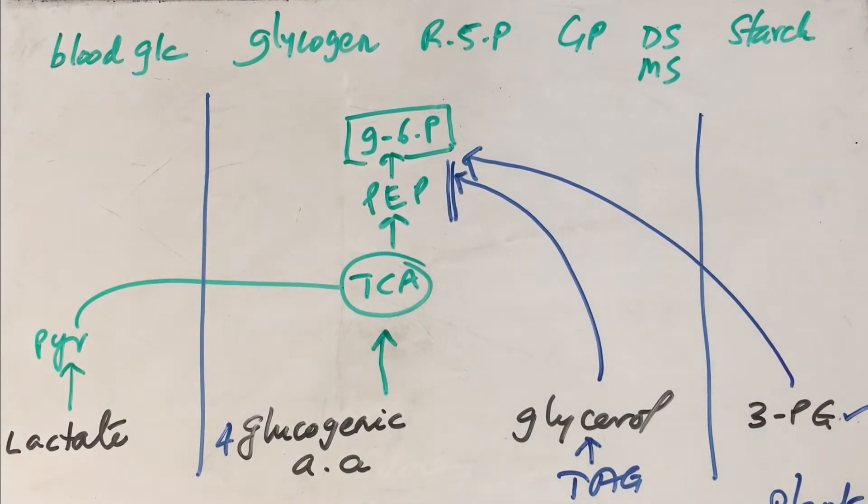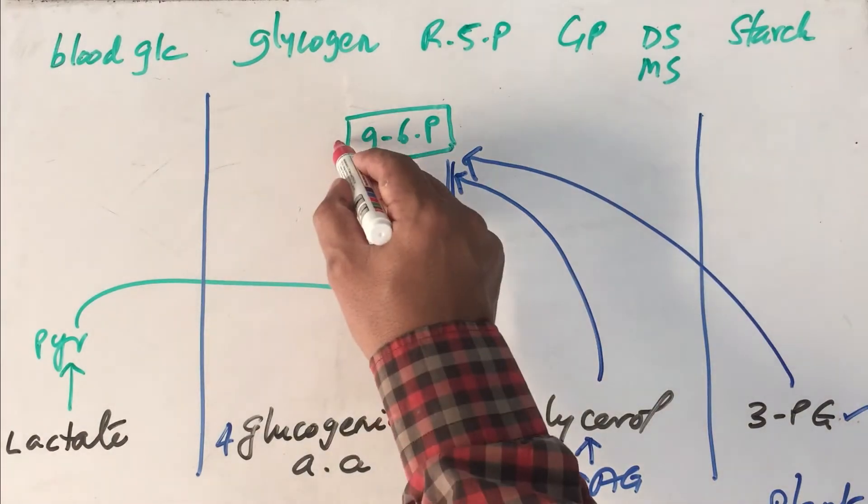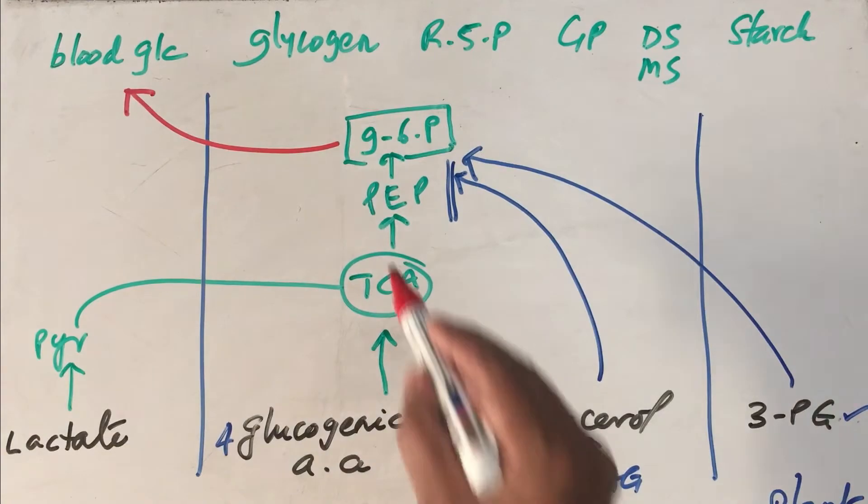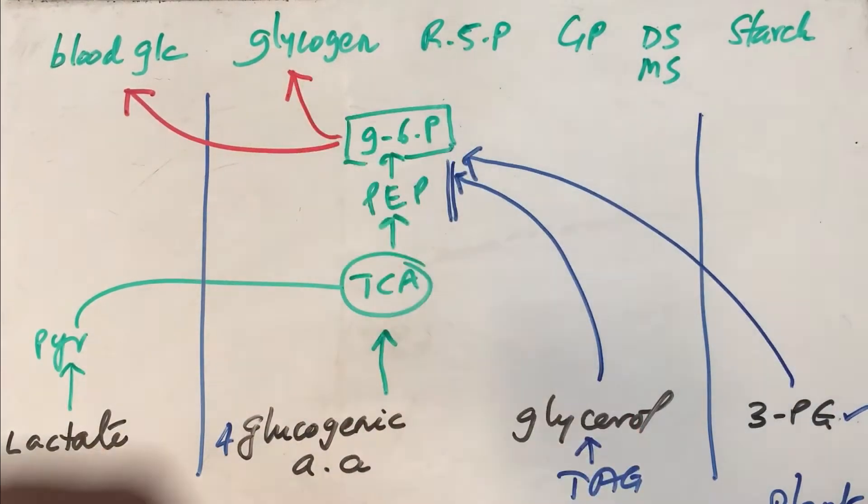Now once you have all these molecules ready, then once glucose 6-phosphate is formed, it has got multiple roles to play. One possibility, it will be used for maintaining blood glucose level. Glucose 6-phosphate can be converted to glycogen.